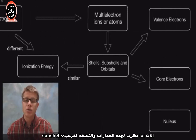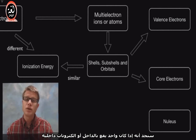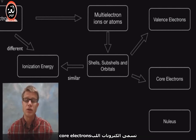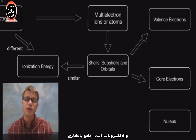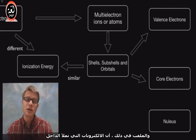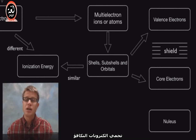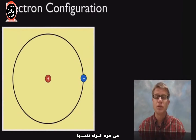If we look at these orbitals and subshells, the inner electrons are going to be called core electrons, and the ones on the outside are going to be called valence electrons. What's interesting is that those on the inside, once they're filled, will actually shield the valence electrons from the power of the nucleus itself.